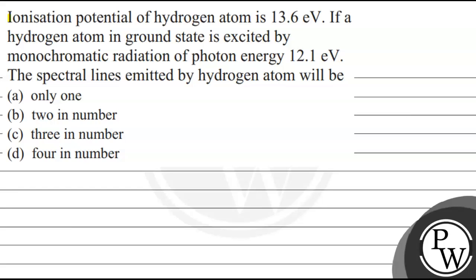Hello Watcho. Let's read the question. Ionization potential of the hydrogen atom is 13.6 electron volt. If a hydrogen atom in ground state is excited by monochromatic radiation of photon energy 12.1 electron volt, the spectral lines emitted by the hydrogen atom will be